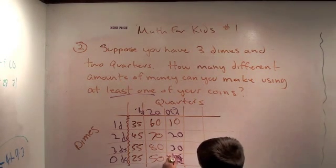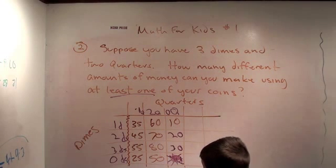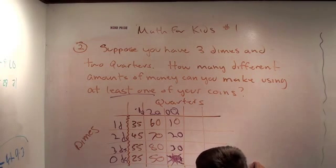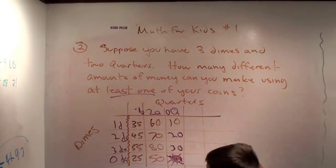Okay. All right. What's the homework problem? Okay, well, what's the answer? The answer. How many different amounts of money can you make? Eleven. Eleven. Okay. Very good.